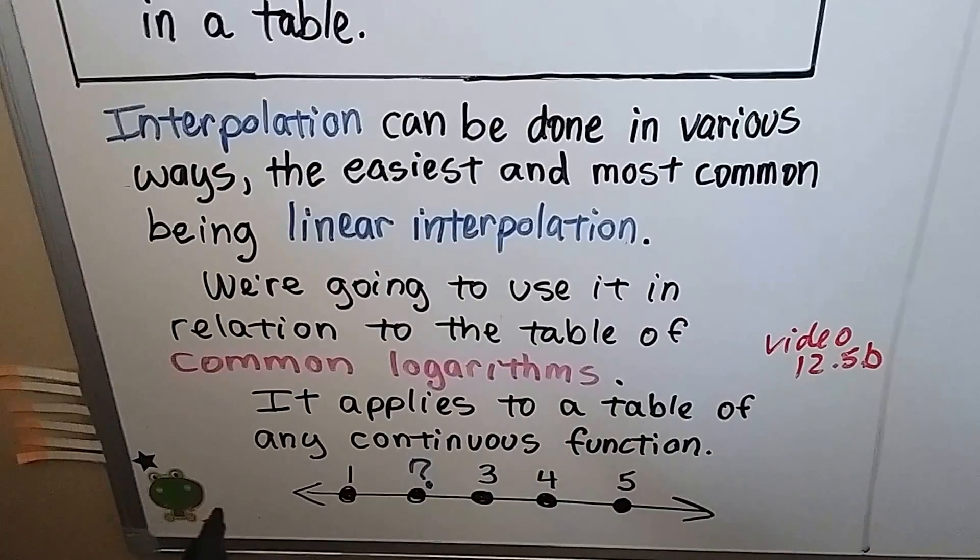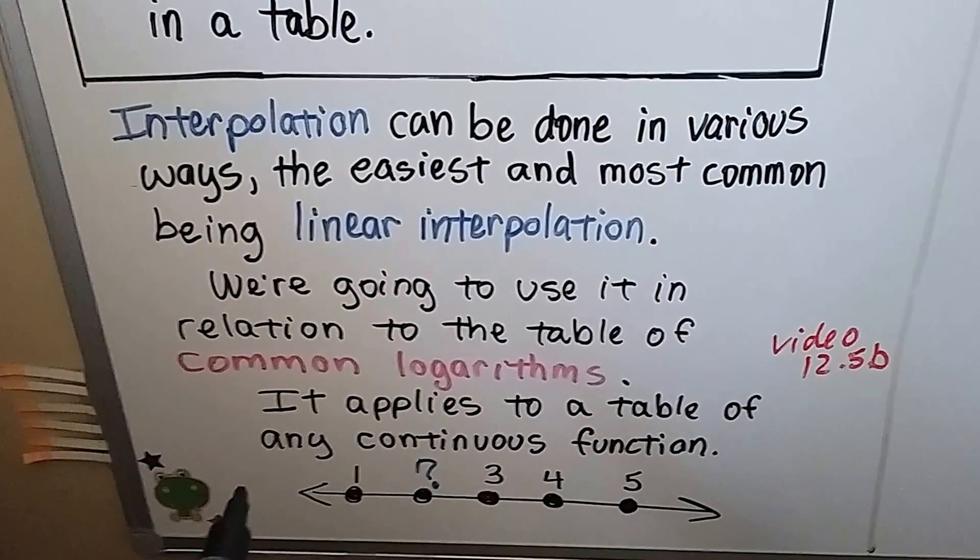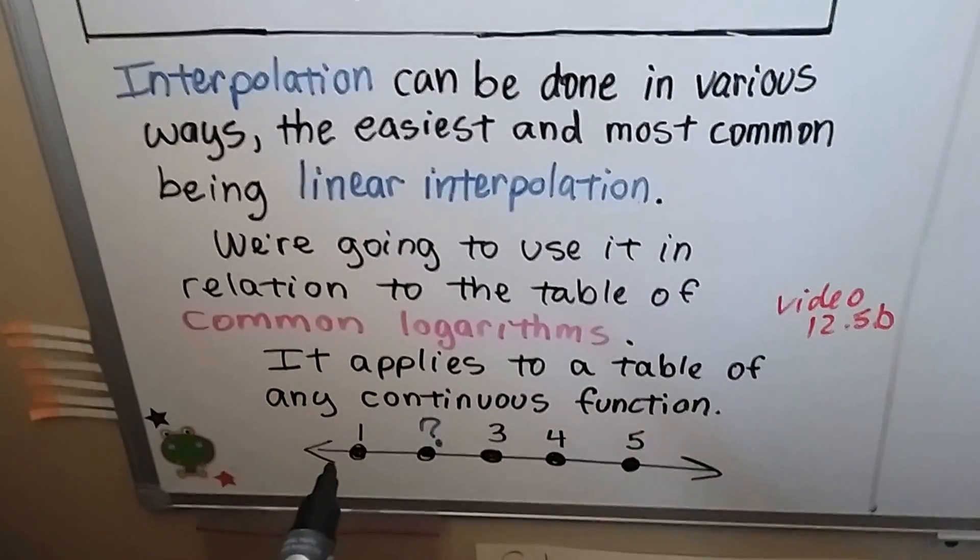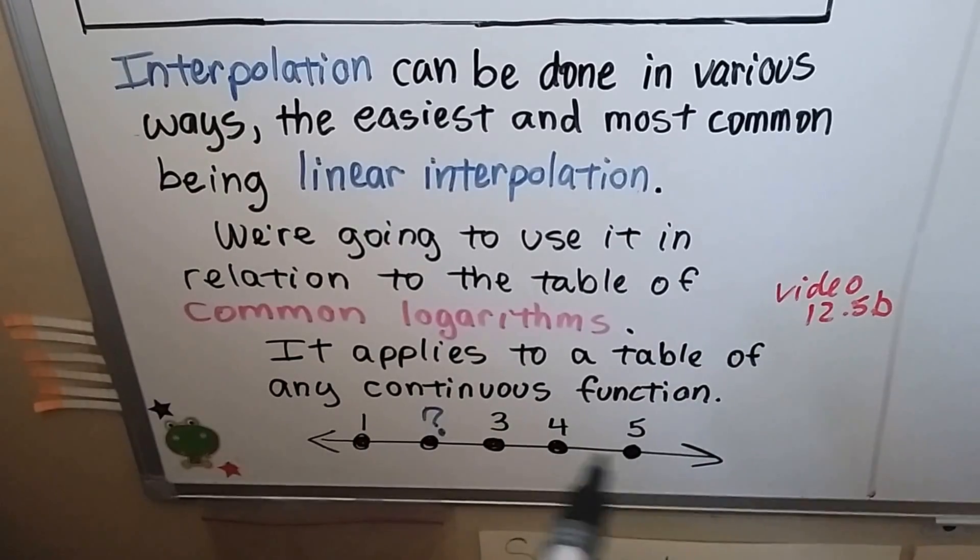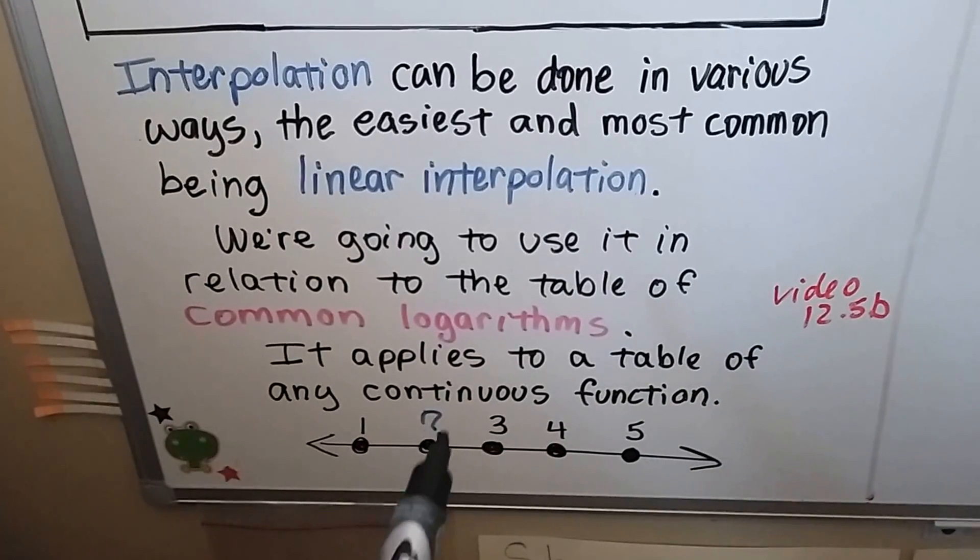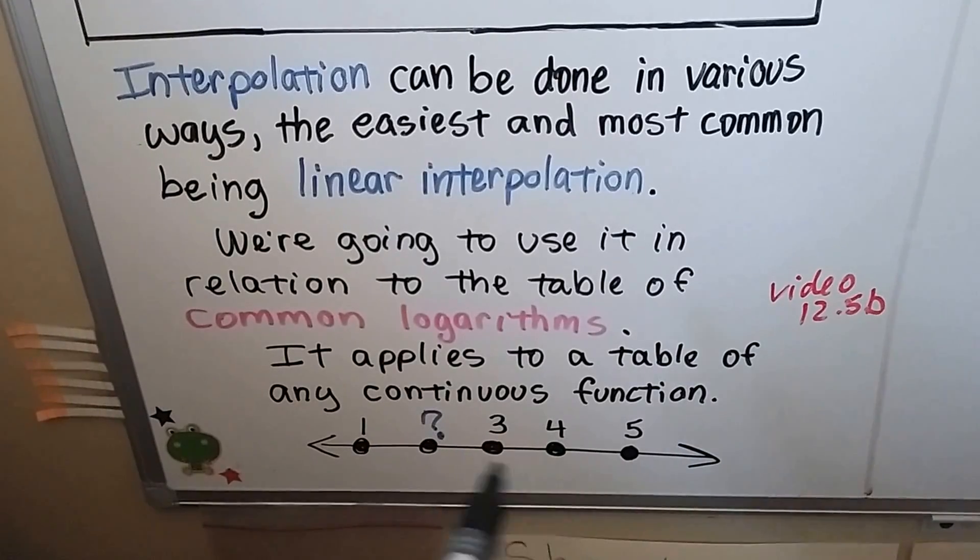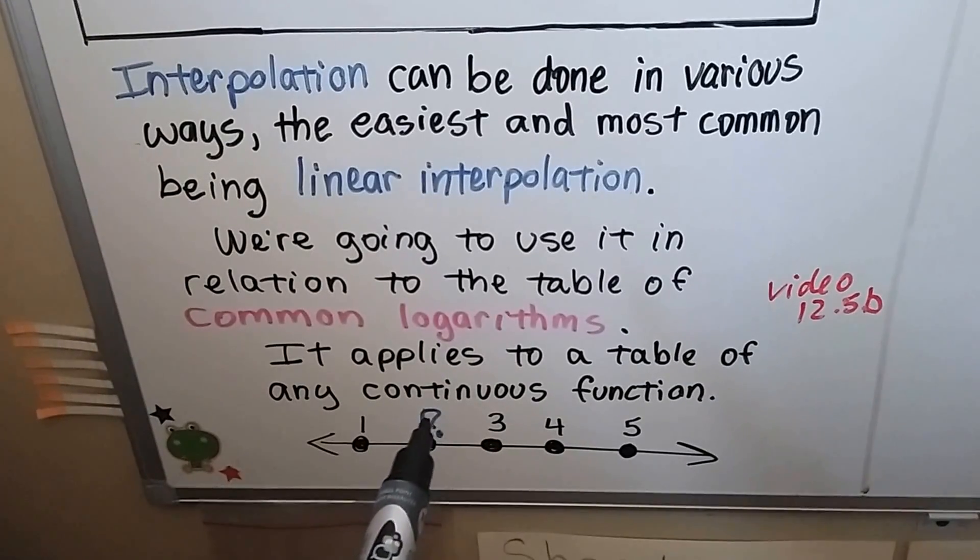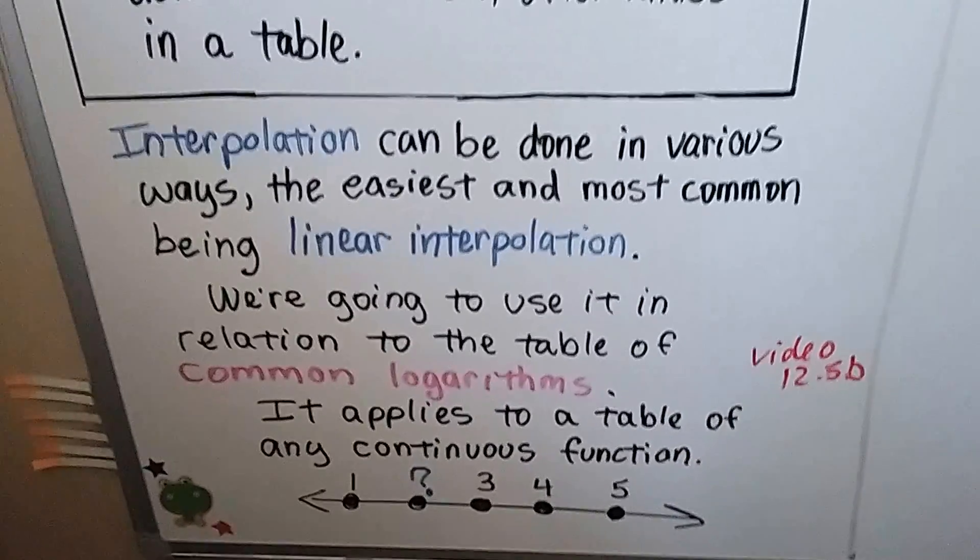This linear interpolation applies to a table of any continuous functions. So basically what we're saying is if we have all these points on a line, they're linear, and there's a missing point here, and we can see they're all evenly spaced, we can interpolate that that's a 2. So that's basically what we're doing.